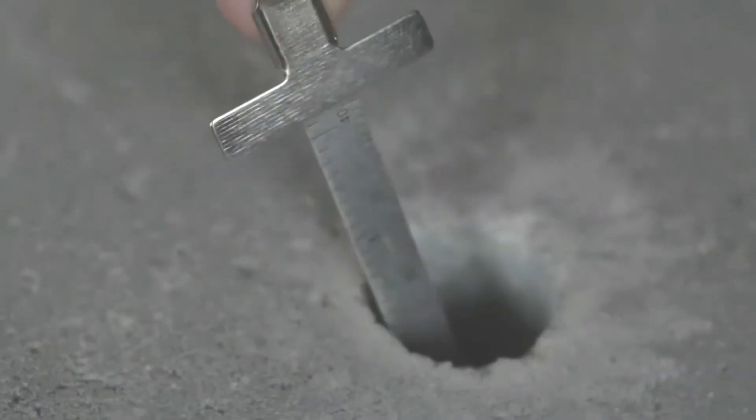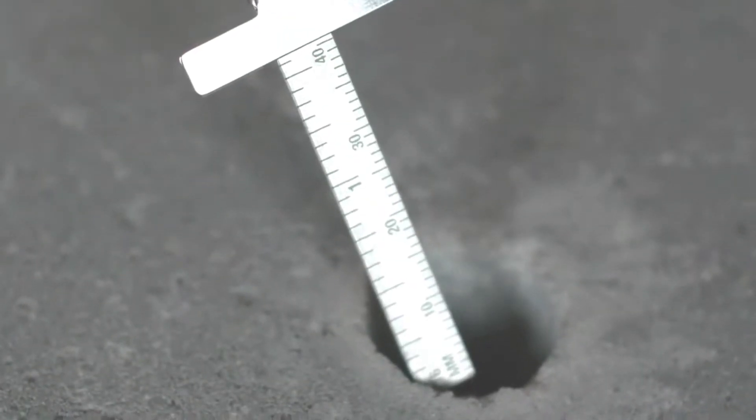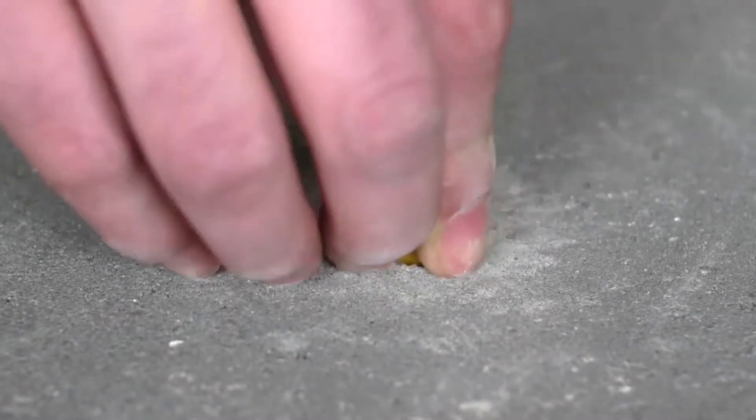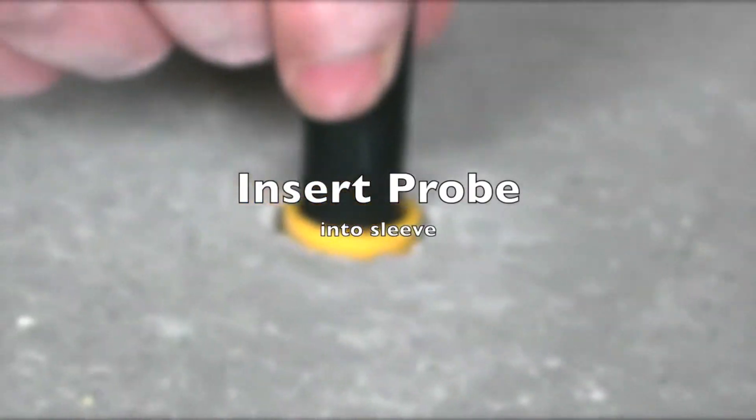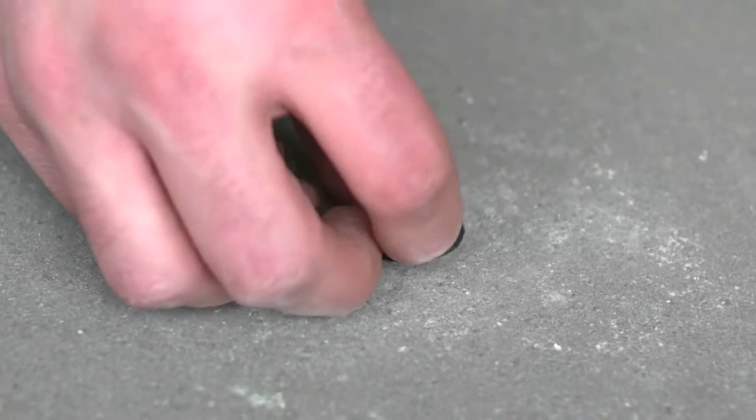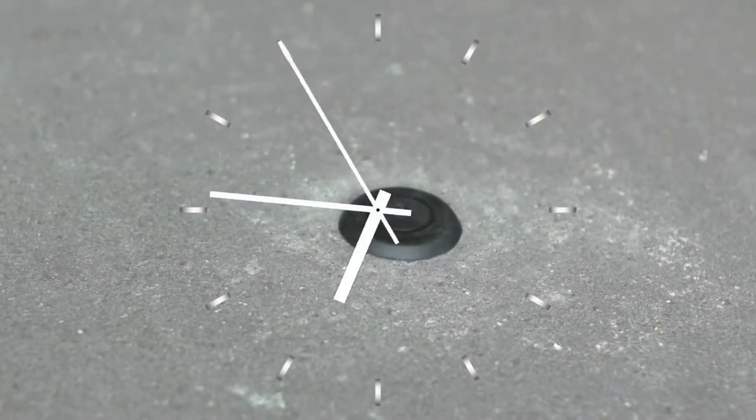To perform this in-situ type relative humidity test, simply drill a hole in the concrete 40% of the thickness of the slab. Push the sleeve into the hole, insert the Hygroi probe into the sleeve and cover with the cap. Leave for the standard test period.